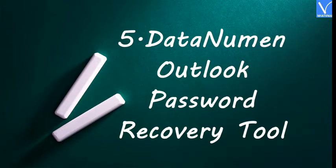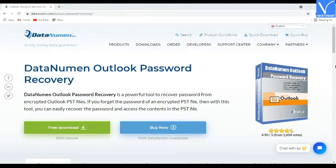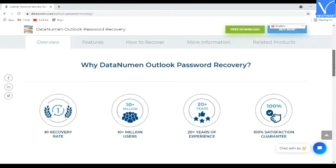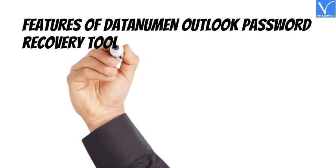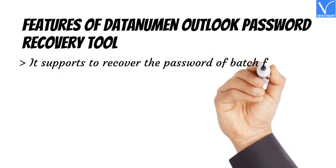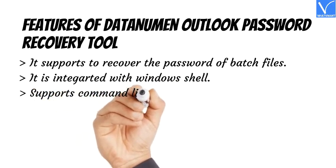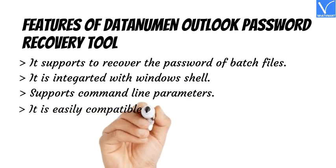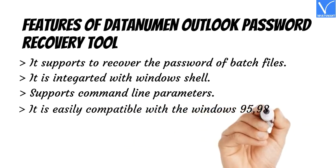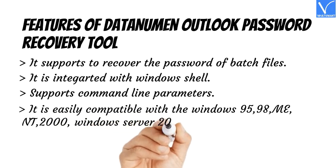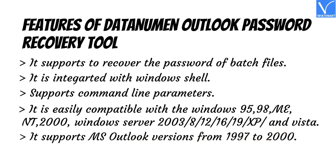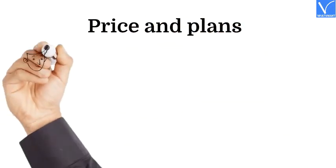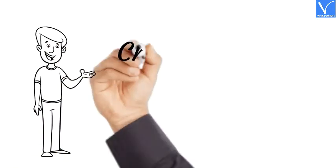Number 5: Data Newman Outlook Password Recovery Tool. Data Newman Outlook Password Recovery Tool is one of the best tools to recover lost PST files effectively. It allows you to recover the password of your Outlook PST files easily to access protected files. Features: Supports batch file password recovery. Integrated with Windows Shell. Supports command line parameters. Compatible with Windows 95, 98, ME, NT, 2000, and Windows Server 2003, 8, 12, 16, 19, XP, and Vista. Supports MS Outlook versions from 1997 to 2000. The price and plans are exhibiting on the screen. The product link is provided in the description.